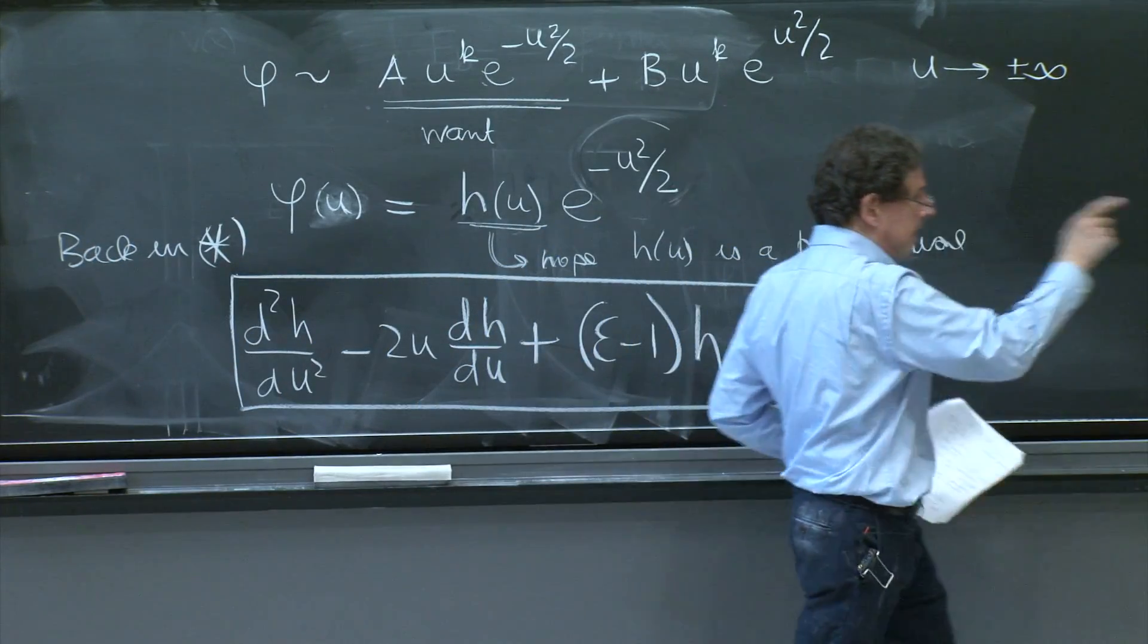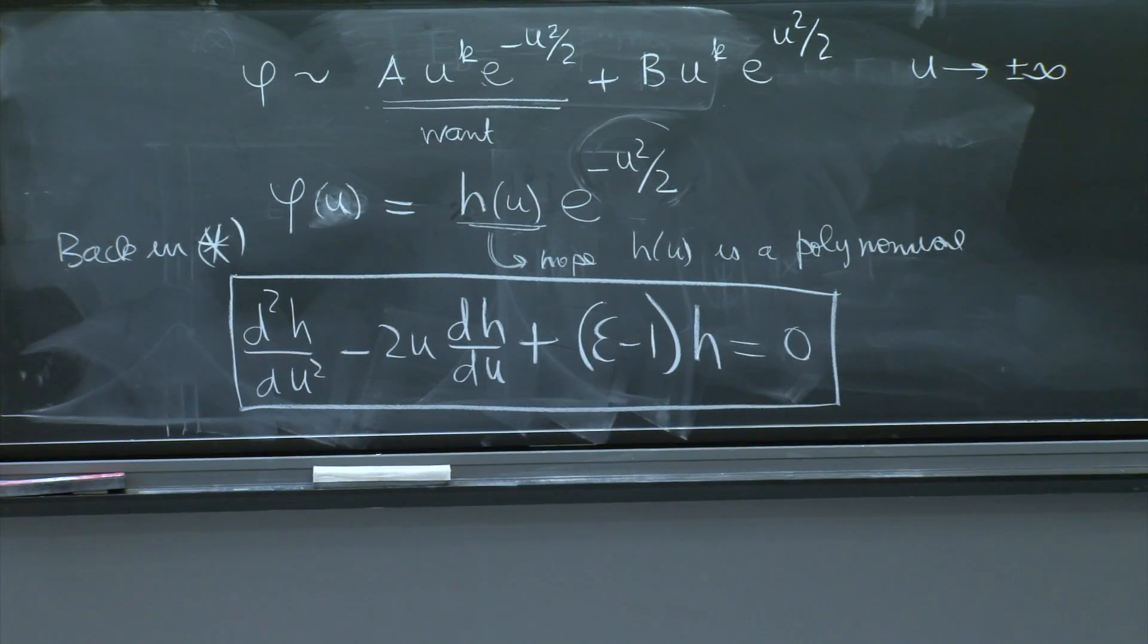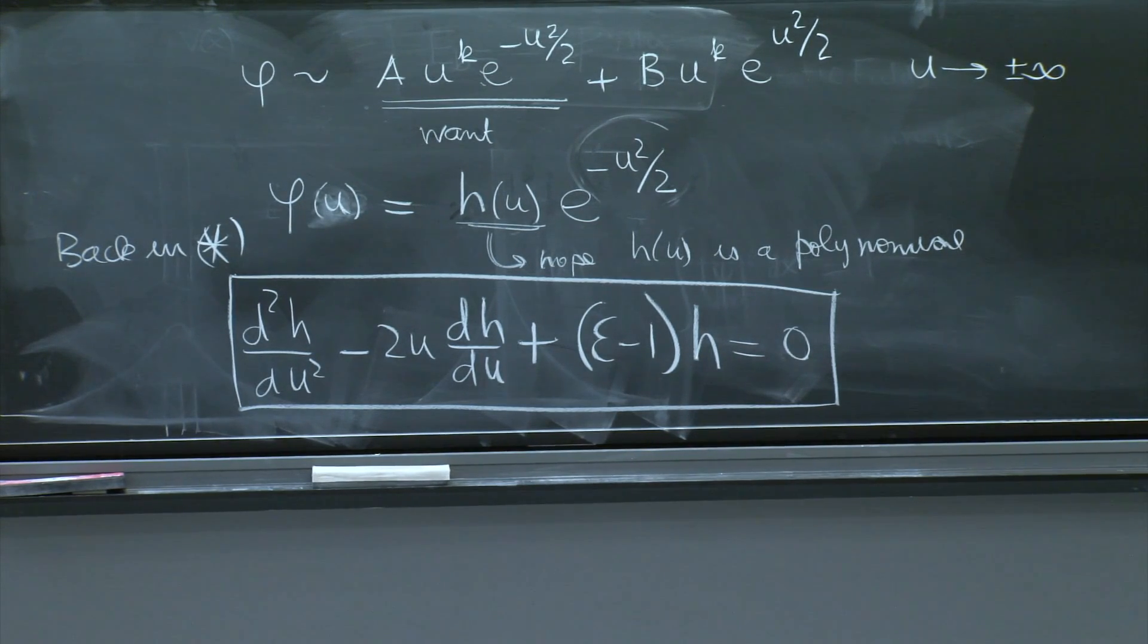So what is the differential equation for h? So back in star, you get d second h du squared minus 2u dh du plus E minus 1 h equals 0.